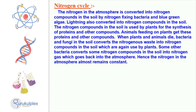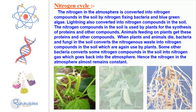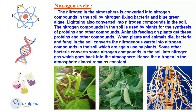The nitrogen cycle is an important process for life on Earth. Nitrogen is found in the atmosphere in the form of a gas. Bacteria and blue-green algae convert this nitrogen gas into nitrogenous compounds in the soil. Plants absorb these compounds and animals feeding on the plants get essential proteins from them. When plants and animals die, the nitrogen is converted back to the soil and returned to the atmosphere as nitrogen gas. This cycle maintains the balance of nitrogen in the atmosphere.